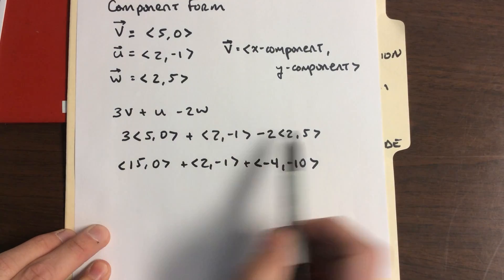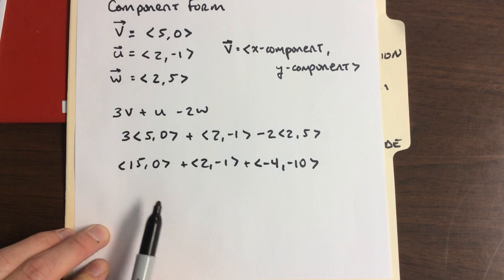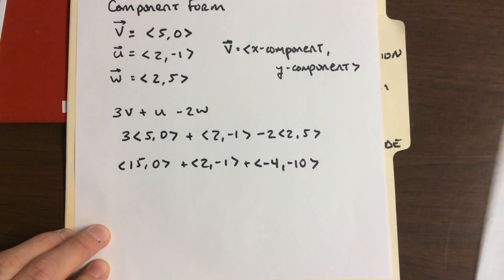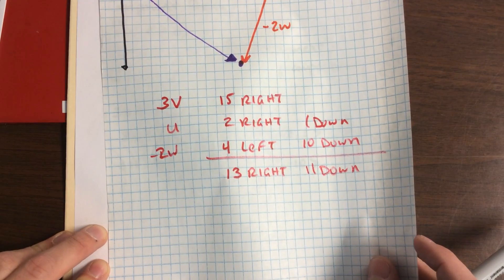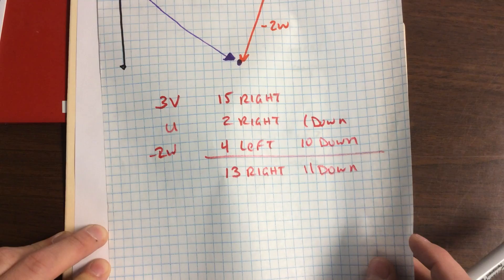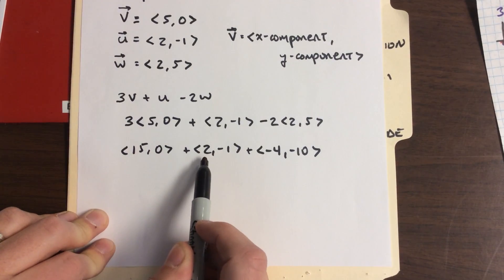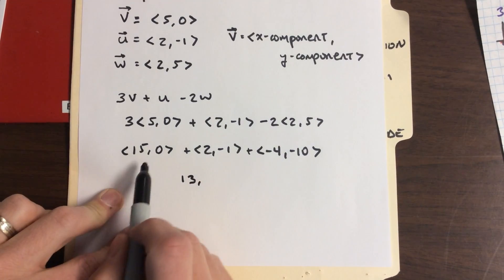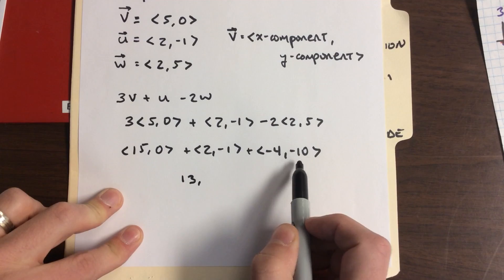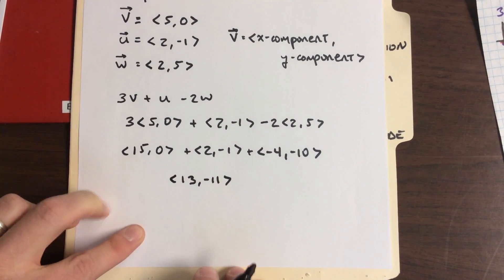In that step, I took care of the scalar multiplication. All we need to do is add the horizontal components, add the vertical components. 15 plus 2 minus 4 gets us 13. 0 minus 1 minus 10 gets us -11. There's our resultant.